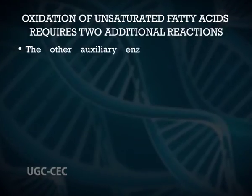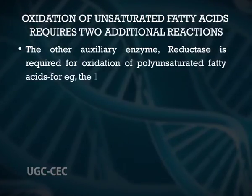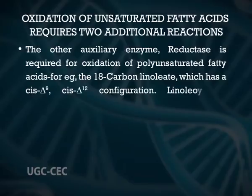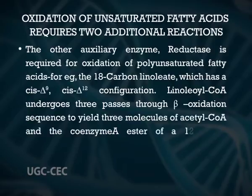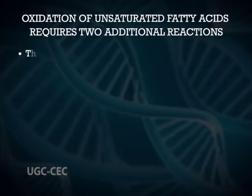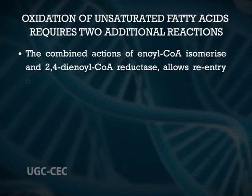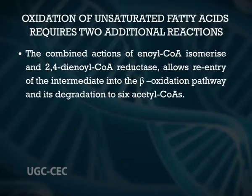The other auxiliary enzyme, reductase, is required for oxidation of polyunsaturated fatty acids. For example, consider 18-carbon linoleate with a cis-delta-9, cis-delta-12 configuration. Linoleoyl-CoA undergoes three passes through beta-oxidation to yield three acetyl-CoAs and the coenzyme A ester of a 12-carbon unsaturated fatty acid with cis-delta-3, cis-delta-6 configuration. Overall, the combined actions of enoyl-CoA isomerase and 2,4-dienoyl-CoA reductase allow re-entry of the intermediate into the beta-oxidation pathway and its degradation to six acetyl-CoAs.